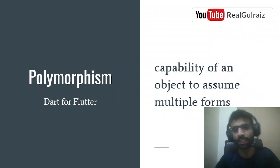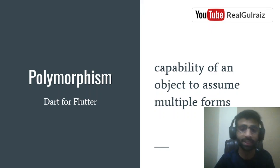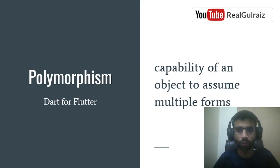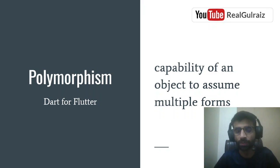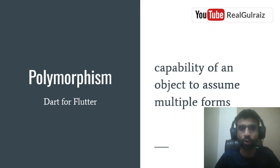Polymorphism means multiple forms — the ability to deal with multiple types in Object Oriented Programming. We have used overriding, which we have used with multiple objects in a parent class. We already have the overriding concept and we will take one example to see how polymorphism helps out.